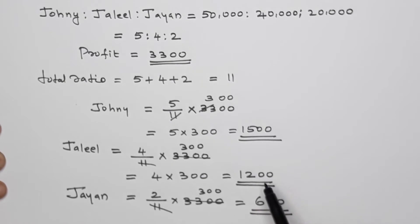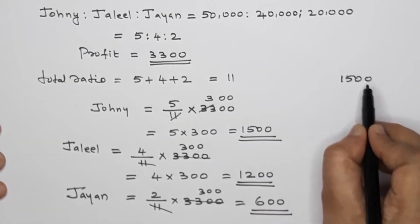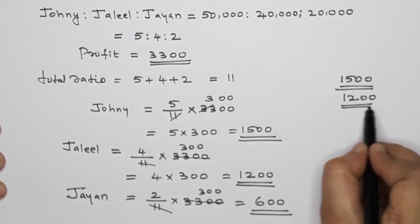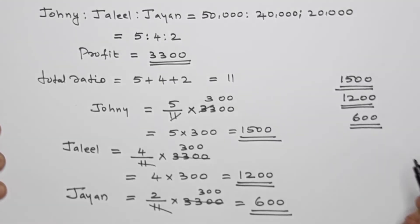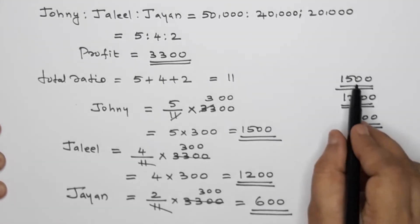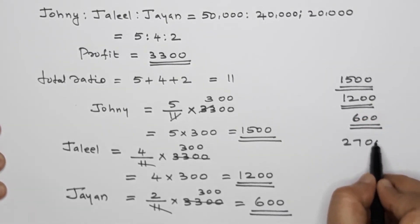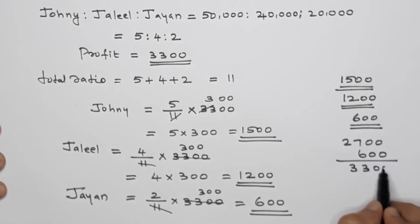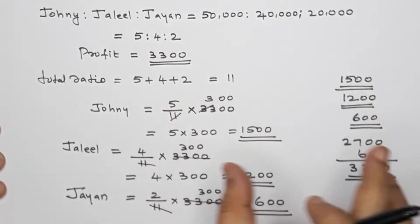If you divide it: Johnny gets 1,500. Jalil's share is 4 by 11 into 3,300, which equals 1,200. Jain's share is 2 by 11 into 3,300, which is 300 into 2 equals 600 rupees. If you add them: 1,500 plus 1,200 plus 600 equals 3,300 total profit. We get the correct answer in simplest form.